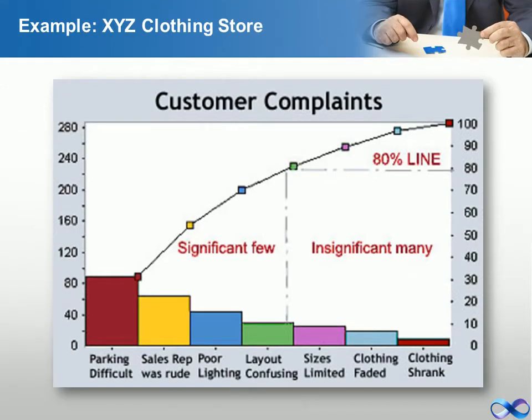In this example, XYZ clothing store was seeing a steady decline in business. By collecting data and displaying it in a Pareto chart, the manager could see which variables were having the most influence.